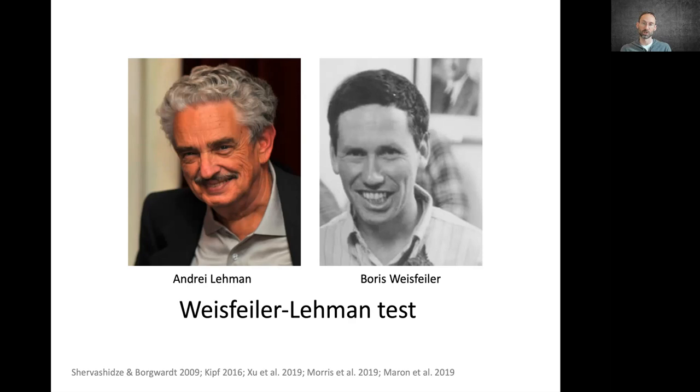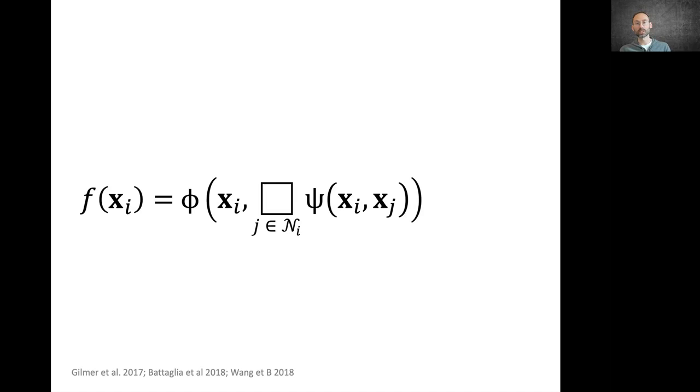Here's the typical way our local aggregation function looks like. We have a permutation invariant aggregation operation, such as sum or maximum or average, a learnable function ψ that transforms the neighbor features, and another function φ that updates the features of node i using the aggregated features of its neighbors. The output of this nonlinear function that depends on both feature vectors of node i and j can be regarded as a message that is sent to update the features of node i from the node j.